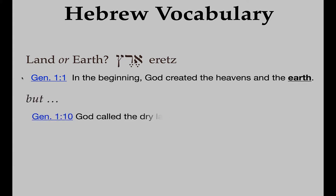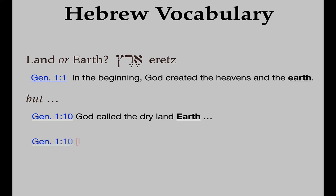In contrast, Genesis 1:10 says, 'God called the dry land earth.' Again you have to be careful with the translation. Literally you should say God called the dry land — 'land' communicates it a little bit better, land as opposed to water. Even in the context of 1:10 you can see he's not talking about planet earth as a body, but rather the dry parts, the dry land. You need to be careful and not read too much into it.